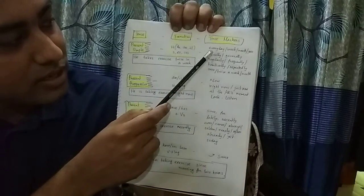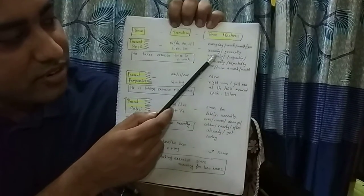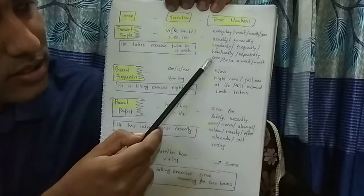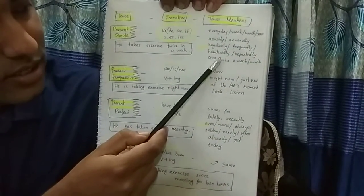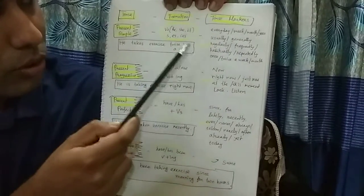Look at the markers: every day, every week, every month, every year, usually, generally, regularly, frequently, habitually, repeatedly, once in a week, twice in a week, once in a month, twice in a month. These will all mark present simple tense.